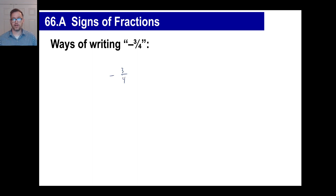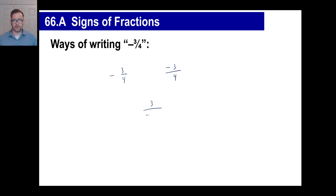You can also write it as negative three divided by positive four — a negative divided by a positive is a negative. Or you can say three divided by negative four — a positive divided by a negative is also a negative. Or you can just say the whole thing is negative.